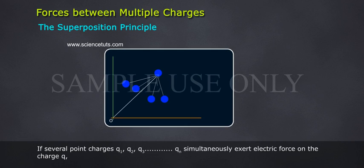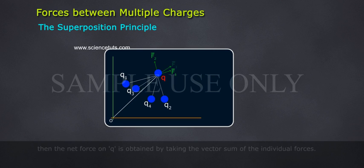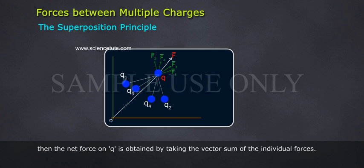If several point charges q1, q2, q3 and so on, qn, simultaneously exert electric force on the charge q, then the net force on q is obtained by taking the vector sum of the individual forces.